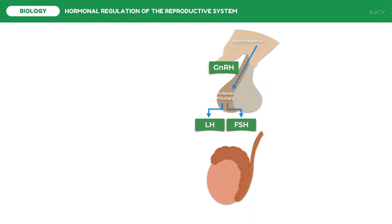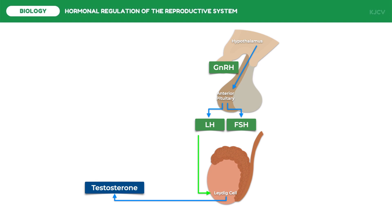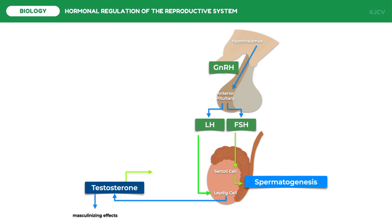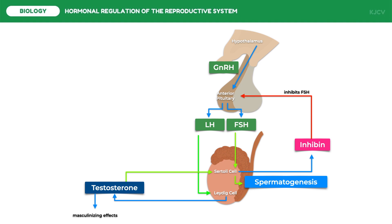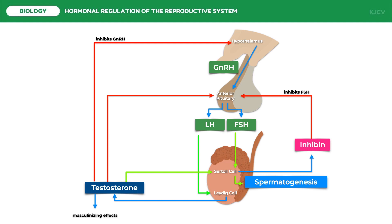LH and FSH act on separate components of the testes. LH acts on the Leydig cells to regulate testosterone secretion. During puberty, testosterone is responsible for the masculinizing effect on teen boys. FSH acts on the Sertoli cells to enhance spermatogenesis, and testosterone also acts on the Sertoli cells to trigger spermatogenesis. If the male has enough sperm cells, the Sertoli cells will produce a hormone called inhibin to inhibit the anterior pituitary from secreting FSH. Also, too much testosterone signals the hypothalamus to inhibit GnRH secretion, and may also act directly on the anterior pituitary to inhibit LH production.